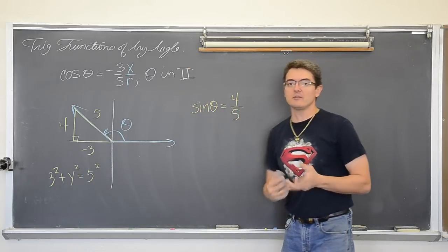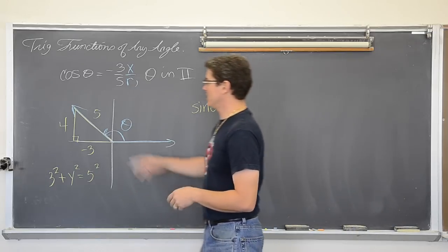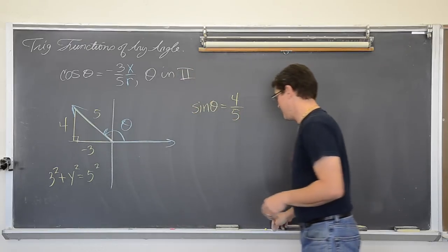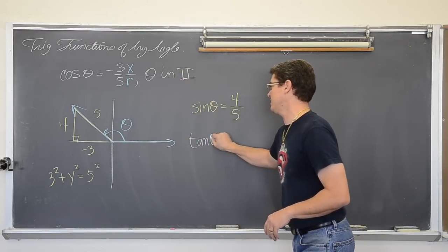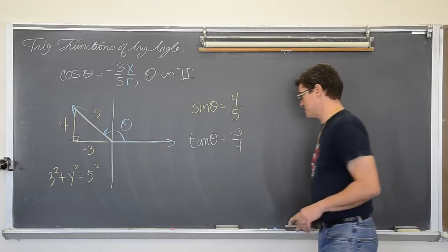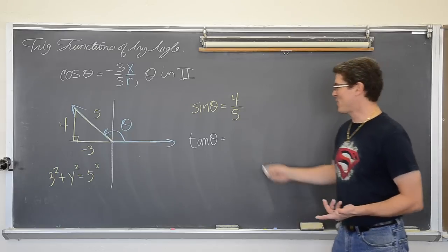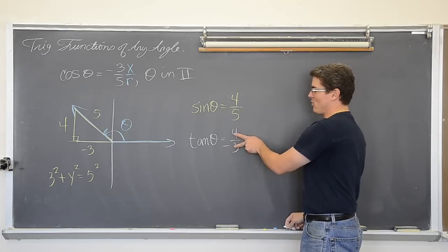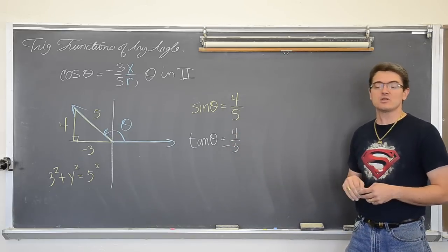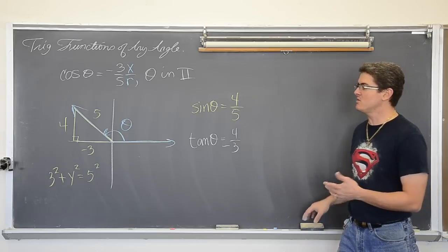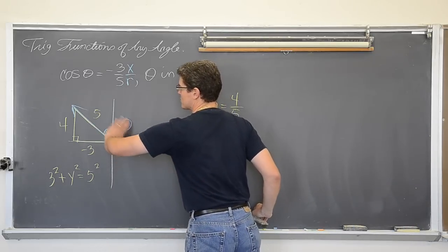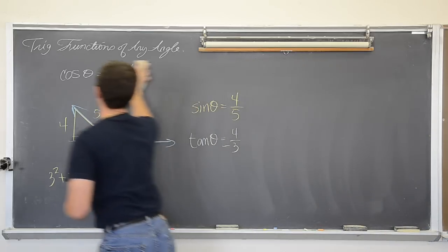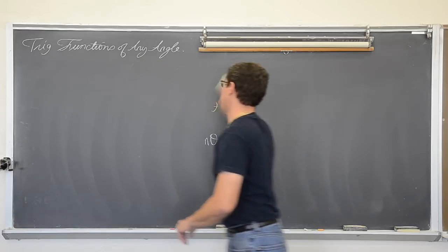In quadrant two our y values are positive, so our sine function had better be positive — and it is, four-fifths. The tangent function in quadrant two: x's are negative and y's are positive, so the tangent would be negative. Tangent is y over x, so it would be four over negative three, which is negative four-thirds. In quadrant two your y's and x's have different signs, so tangent should have a negative sign. That is how you set up these trig function problems using little right triangle drawings and showing the rotation.